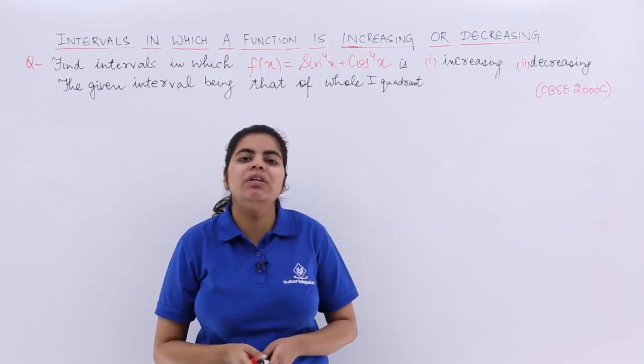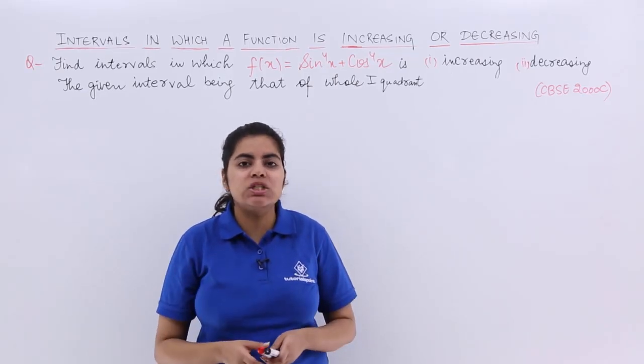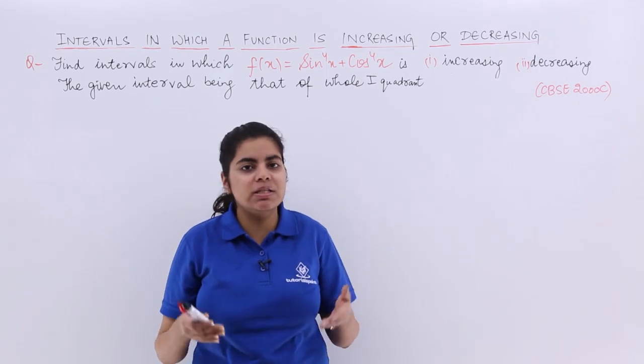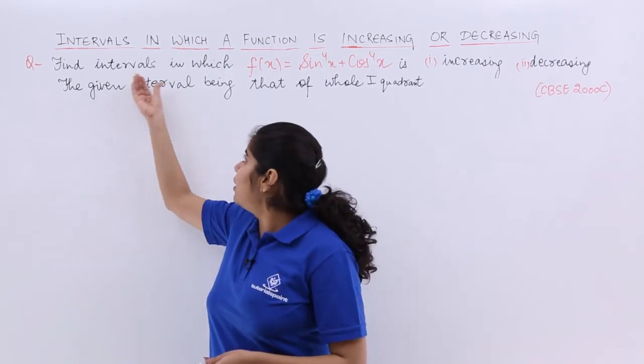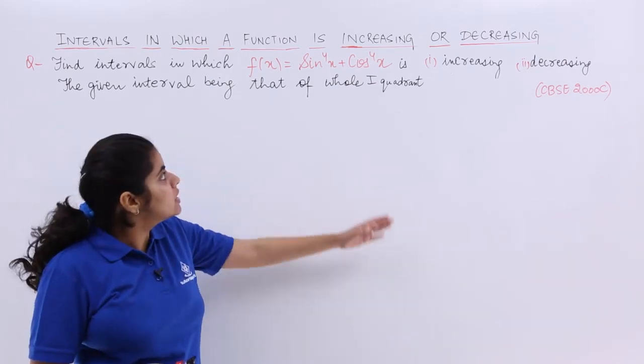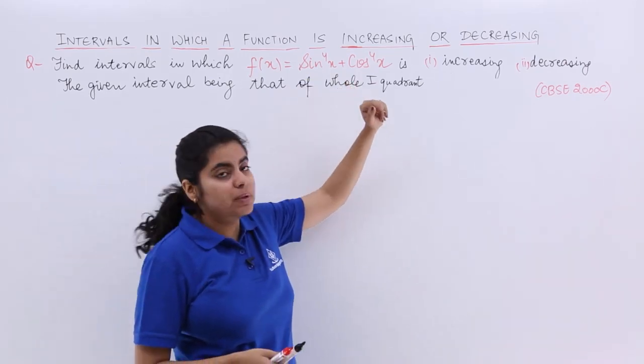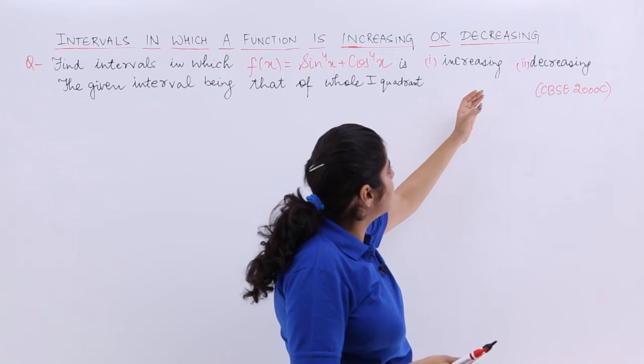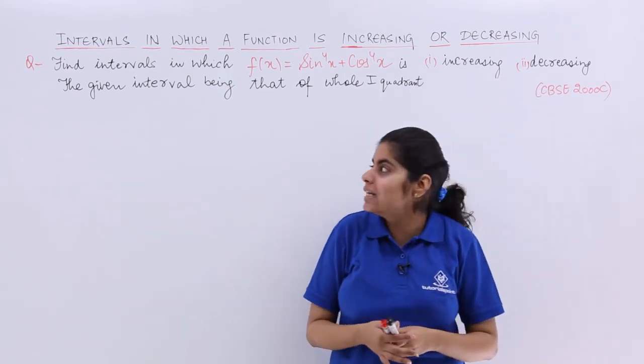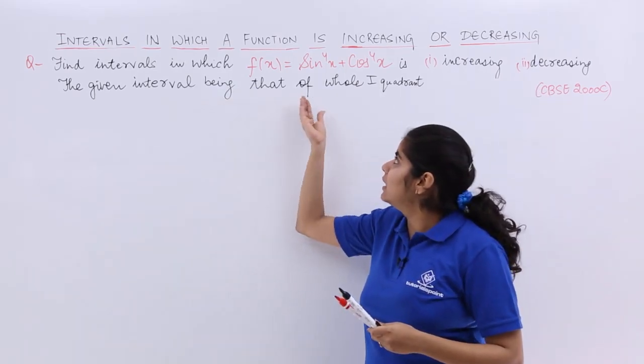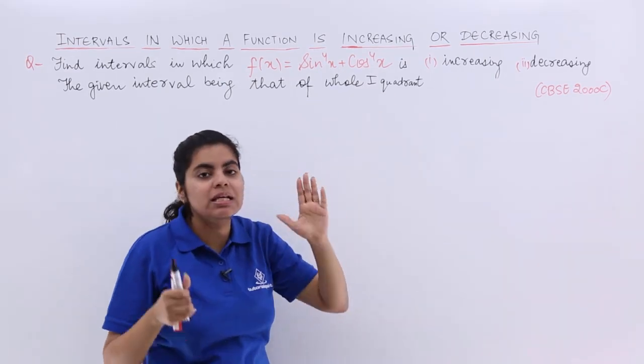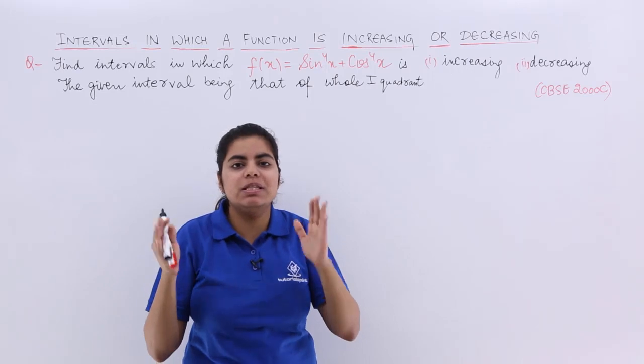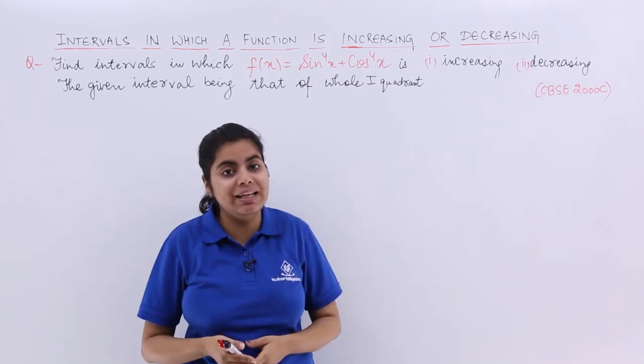In this video, let's talk about the next numerical problem based on what are the intervals in which a given function is increasing or decreasing. Find the intervals in which f(x) = sin^4(x) + cos^4(x) is increasing or decreasing. The given interval is the whole first quadrant, meaning x lies between 0 to π/2.